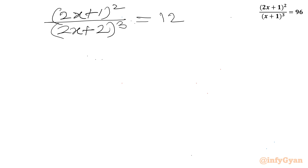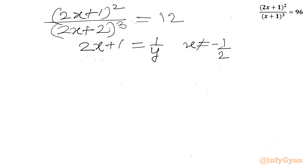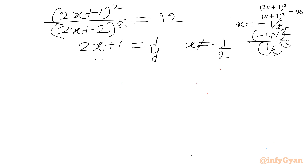Now I will consider a substitution: 2x + 1 = 1/y. Note that x cannot equal negative half — if we plug in negative half, the numerator becomes (−1 + 1)² = 0, giving LHS = 0 which is not equal to 96. So we can safely set 2x + 1 = 1/y where x ≠ −1/2.